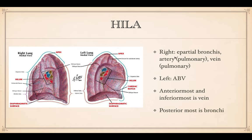Eparietal just means above. So on the right, there's going to be the bronchus, artery, and vein. On the left, it's going to be the artery, bronchus, and vein — in a different order. The anterior and inferiormost is usually the vein, and posterior is going to be the bronchi.